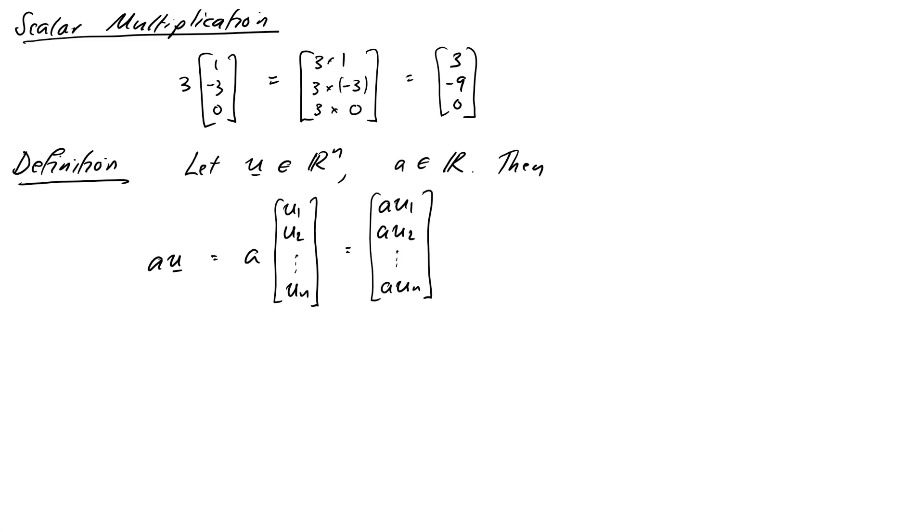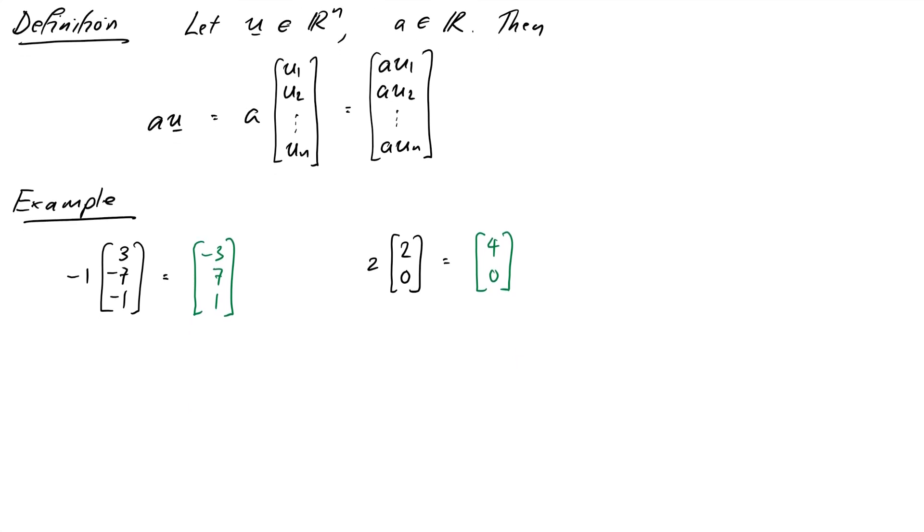Again, let's just do a quick example to check that you guys are happy with it. Pause the video once these are on the screen and calculate the following two: negative 1 times 3, negative 7, negative 1, and 2 times 2, 0. Now hopefully you got negative 3, 7, 1 and 4, 0. Just be careful when you're multiplying and adding vectors that we're careful to make sure that our negative signs cancel correctly. If we've got a negative times a negative, we've got a positive, that kind of thing.